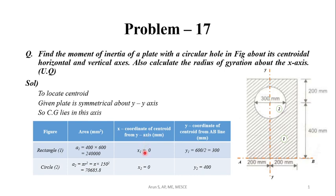The rectangle's centroid lies on the y-axis itself, so the x-coordinate is 0. The y-coordinate from the reference line a-b: the rectangle's centroid is at h/2 distance, that is 600/2 = 300 mm from base a-b. So y₁ = 300 mm.